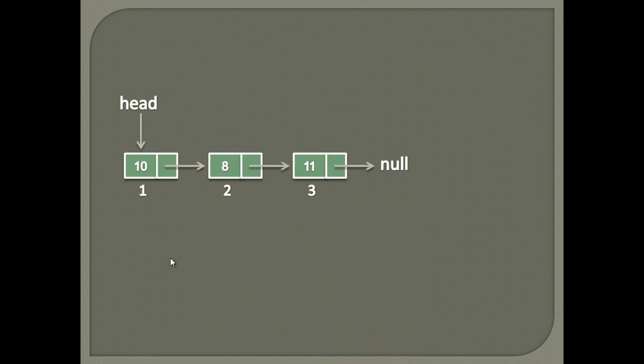The final list becomes: 10 at position 1, 8 at position 2, 11 at position 3, and node 15 is removed from the list.